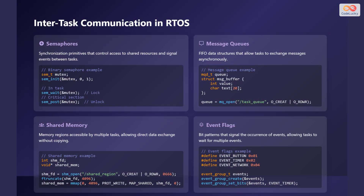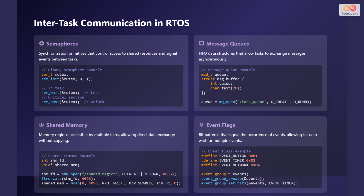Now let's delve into the various mechanisms that enable tasks to communicate and synchronize with each other in an RTOS environment. Semaphores are synchronization primitives that control access to shared resources and signal events between tasks. Message queues are first-in, first-out data structures that allow tasks to exchange messages asynchronously. Shared memory consists of memory regions accessible by multiple tasks, allowing direct data exchange without copying. Finally, event flags are bit patterns that signal the occurrence of events, allowing tasks to wait for multiple events simultaneously.